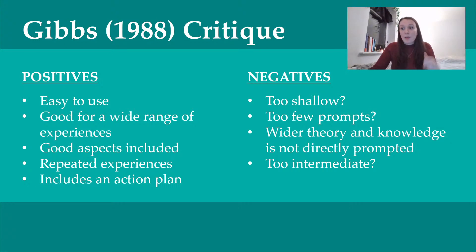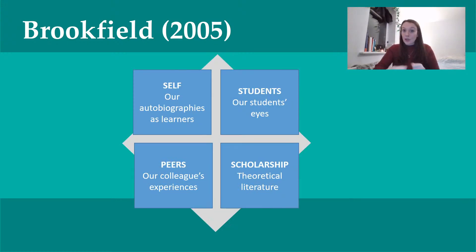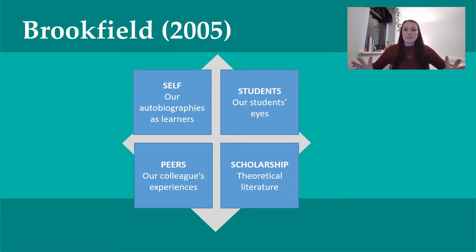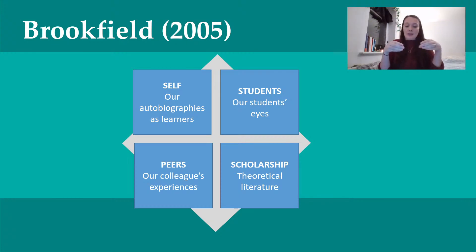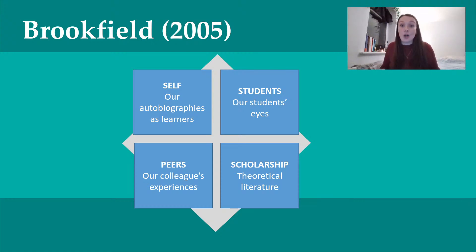Moving on to the Brookfield model. As I said, this came from education — the idea behind this one was to help teachers become a little bit more critically reflective. It looks like this — kind of very different from Gibbs, but don't panic. So imagine you have an experience and it looks like a Battenberg cake. If you cut through it, a cross section will look like four different domains. What this helps you do is look at the cross section — you're dissecting the experience and having a look at it from a different angle through all these different domains.